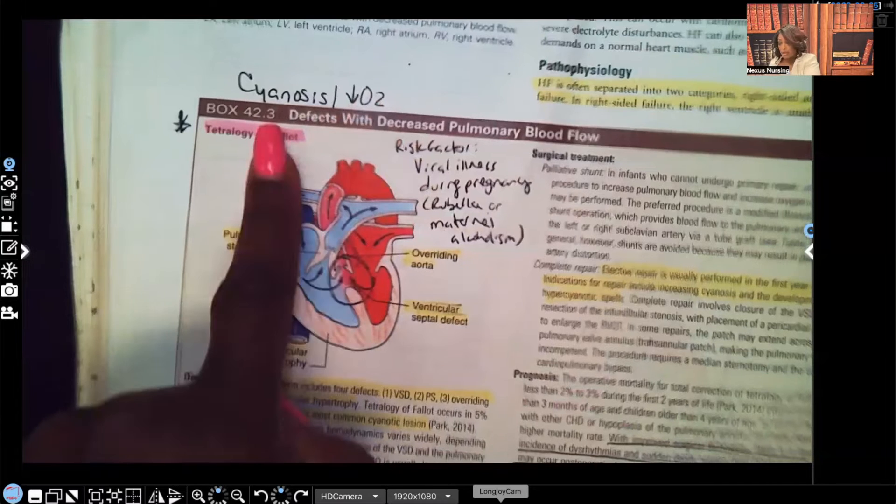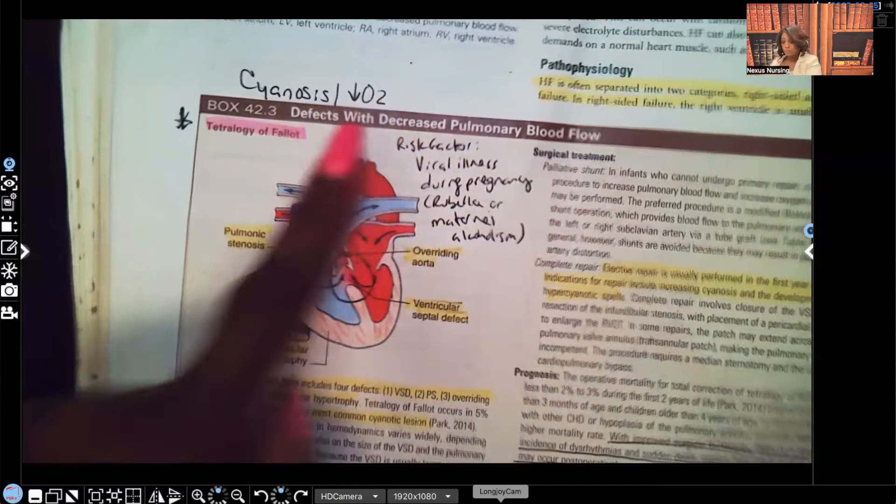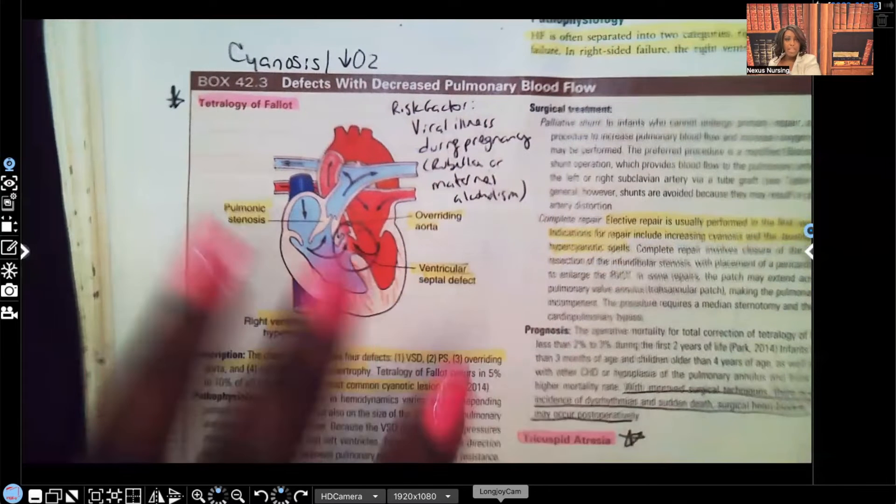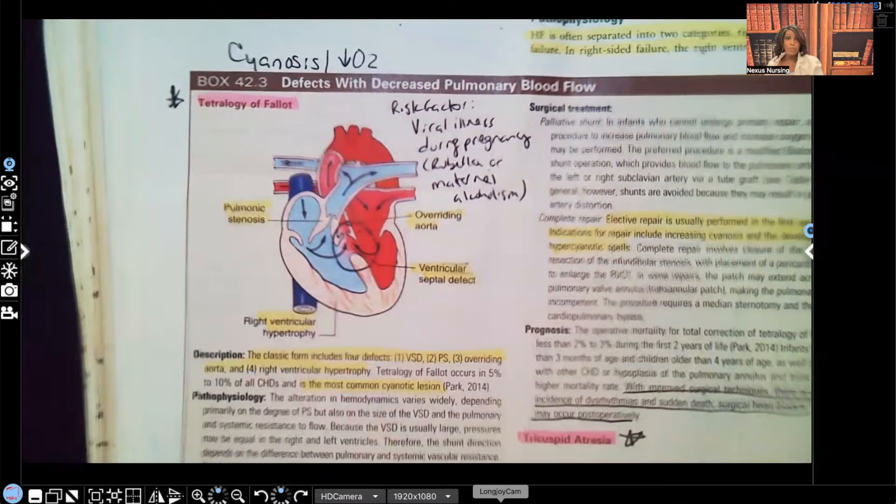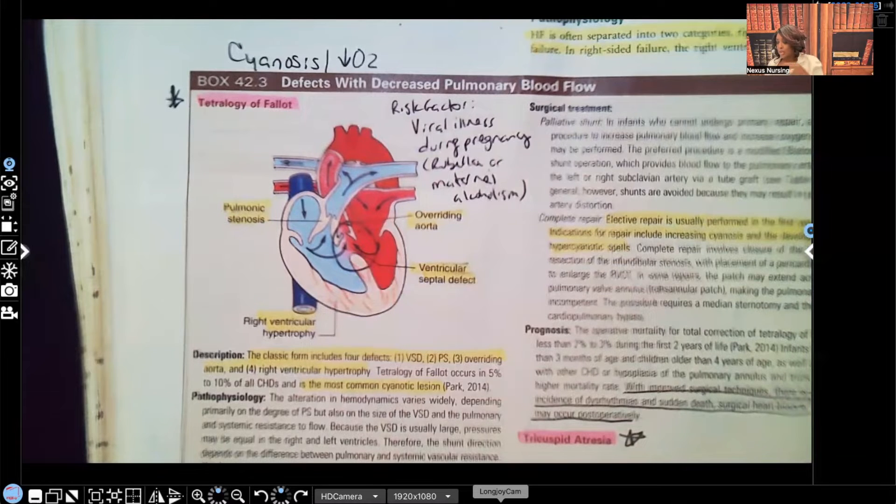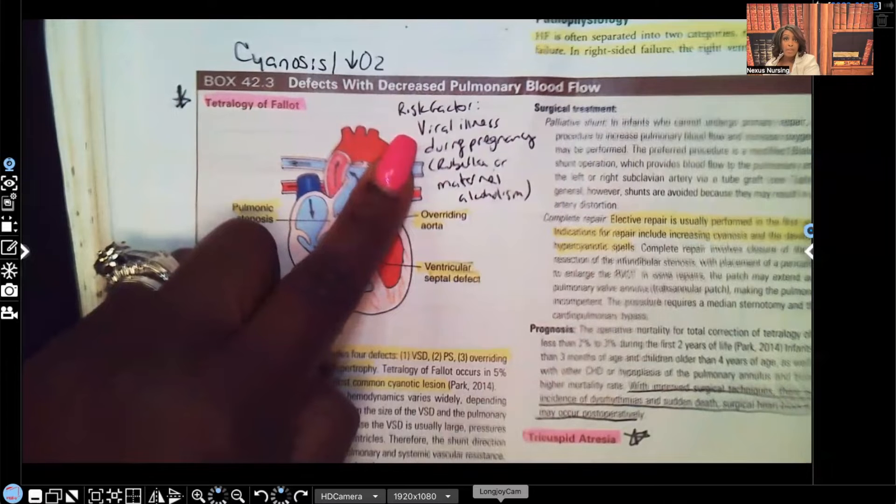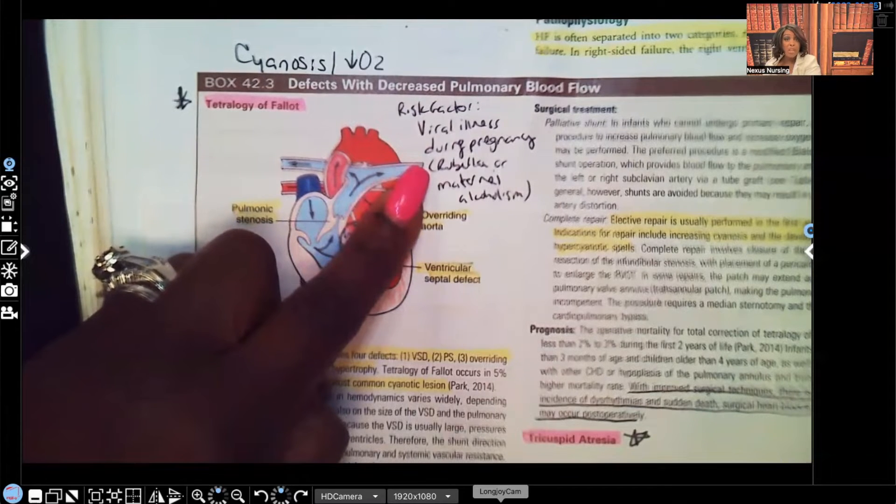And that's what's causing the decreased oxygen to the patient, decreased perfusion to the patient. That's what's causing the patient to turn cyanotic. And if you can see up here, I wrote cyanosis, decreased oxygen. Now I didn't see this in this box, however, for testing purposes, very often you'll be asked about risk factors. So I just wrote it in: if mom had a viral illness during pregnancy such as rubella, or if she was drinking during pregnancy, that's also a risk factor.